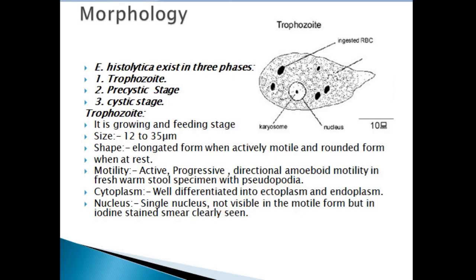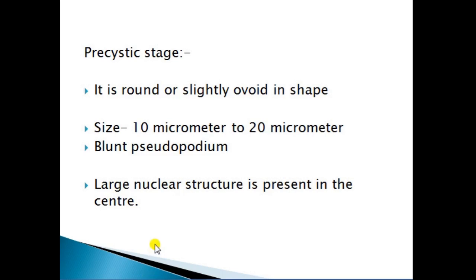The cytoplasm of the trophozoite is differentiated into ectoplasm and endoplasm. The nucleus of the trophozoite is single; it is not clearly visible but when stained with iodine, it can be seen clearly. In the pre-cystic stage, the parasite becomes round or slightly oval in shape. The size of the pre-cystic stage varies from 10 micrometers to 20 micrometers. The pseudopodia are in blunt form and a large nuclear structure is present in the center.